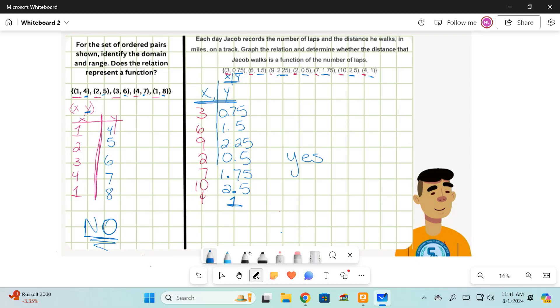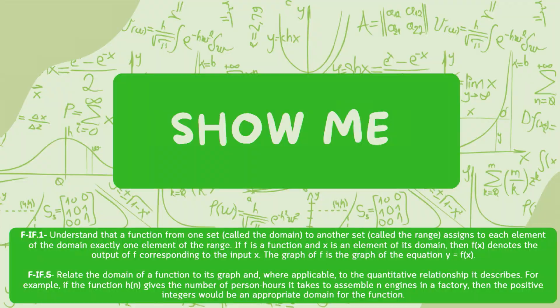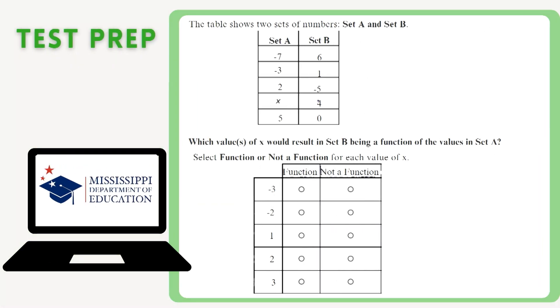So, real world context, I've looked at x and y values. Now it's time for us to see it in a different light. Of course, you know we have a test prep question. This one is coming from the Mississippi Department of Education. It says, the table shows two sets of numbers, Set A and Set B. Which values of x will result in Set B being a function of the values in Set A? Select function or not a function for each value of x.